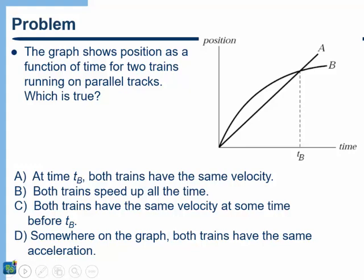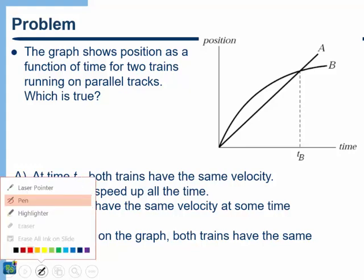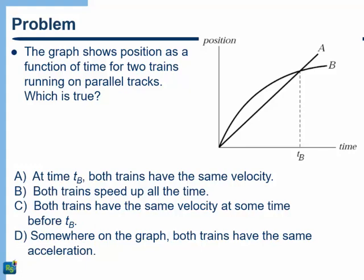Try this one. The graph shows the position as a function of time for two trains running on parallel tracks — which is true? Let's look at this together. Train B is the same graph as we had in the last slide, so train B is slowing down all the time. This is a position versus time graph, so the slope of each graph tells us about the velocity. Notice that the slope of the position versus time graph for train A is constant, so train A has a constant velocity.